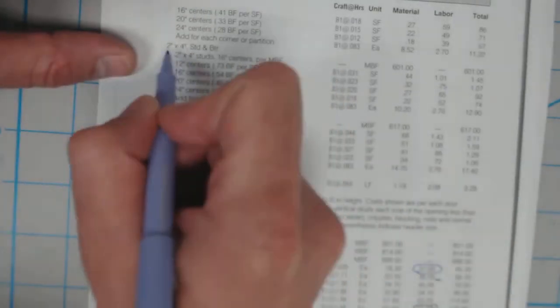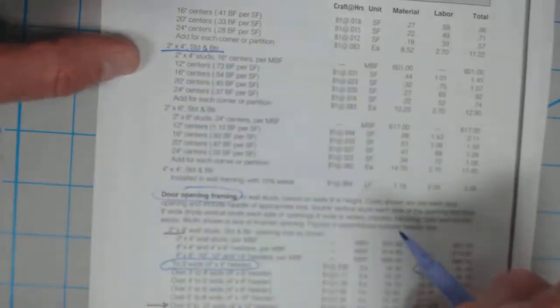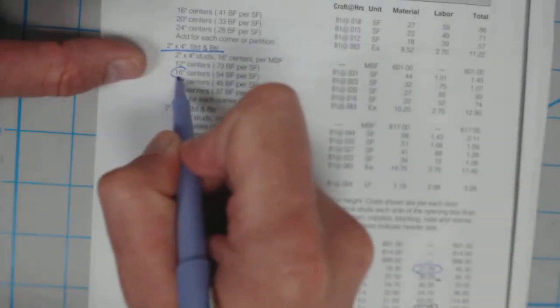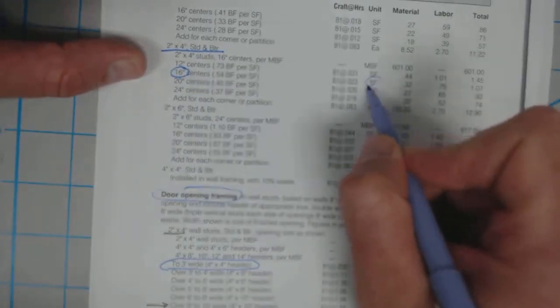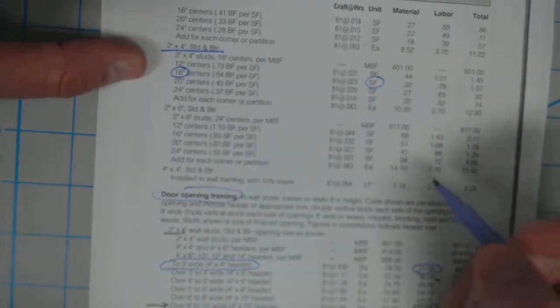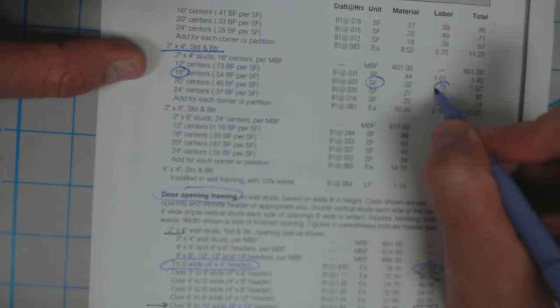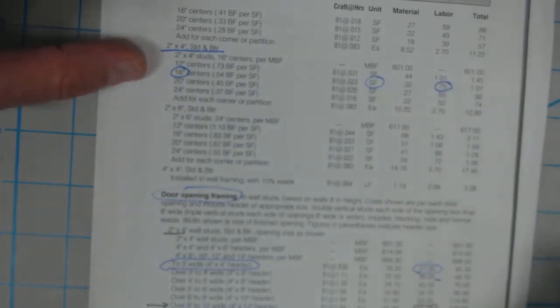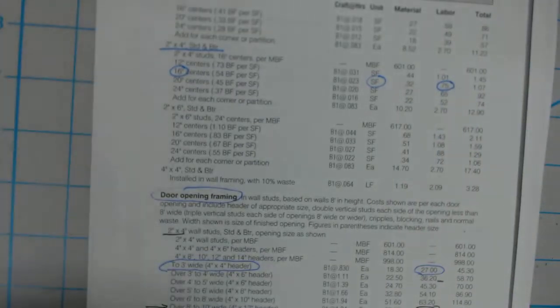What we're looking at in studs is per square foot of wall area. We are looking at 2x4 studs, 16 inches on center. Again, this is a square foot cost for the exterior of the building, and we're looking at $0.75 per square foot for that labor price.